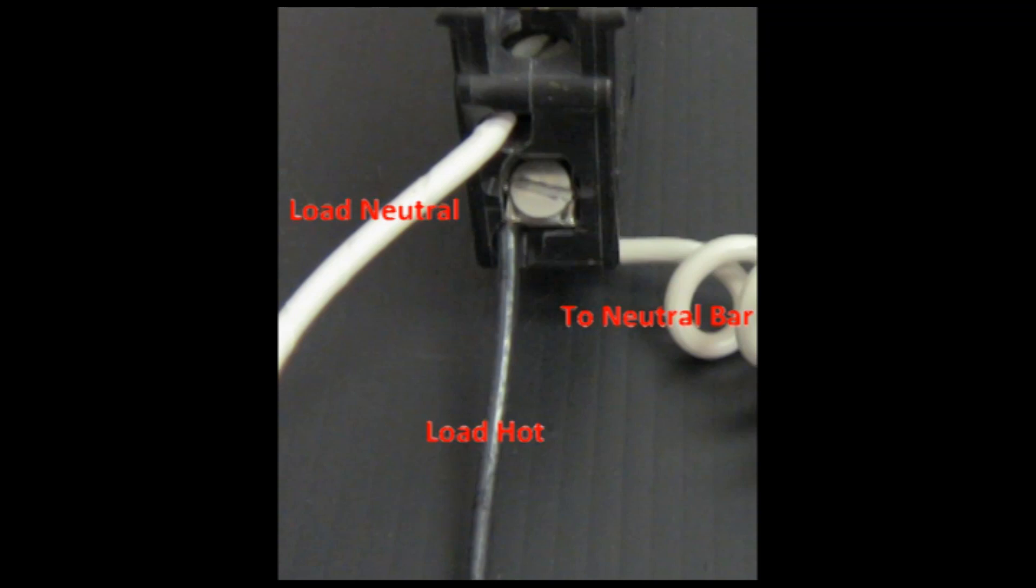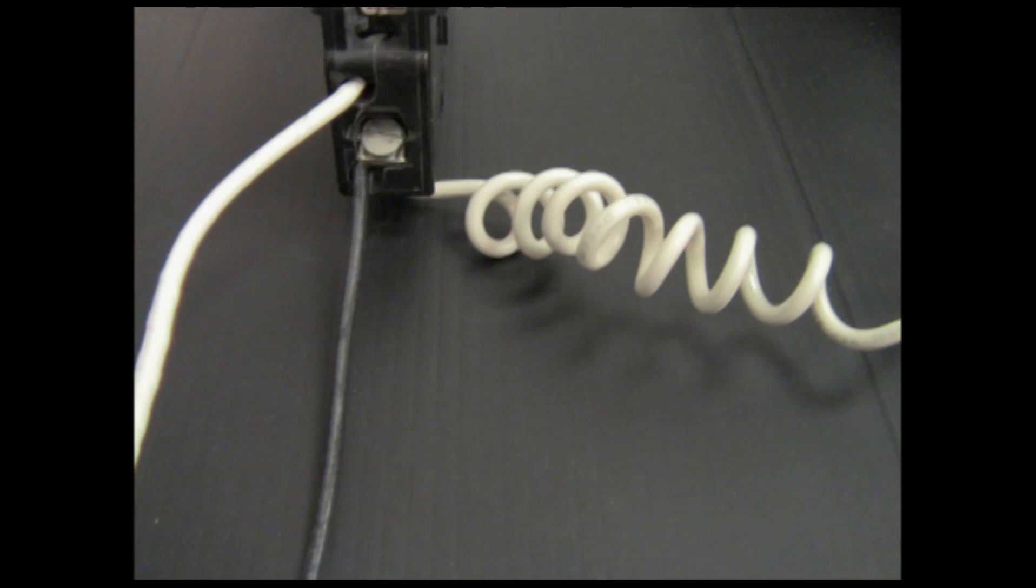Therefore, the load neutral passes through the arc fault breaker, guaranteeing your safety. If you look at the base of the breaker, you can see this clearly.